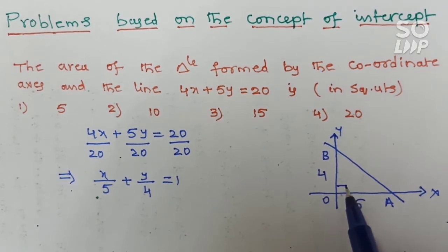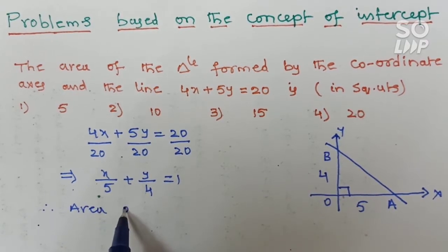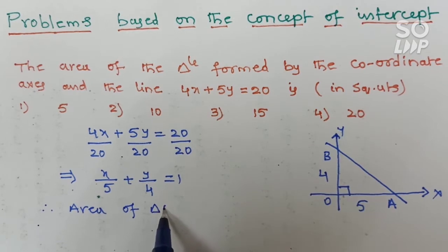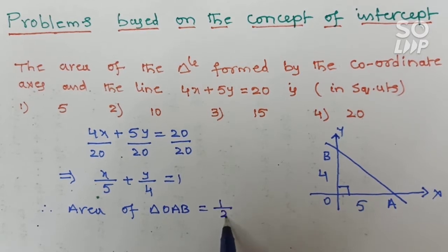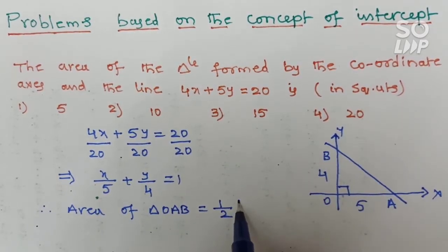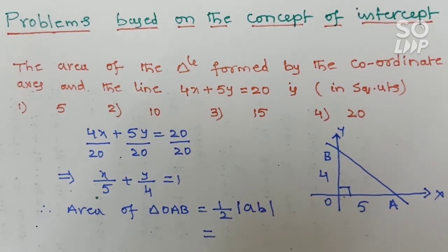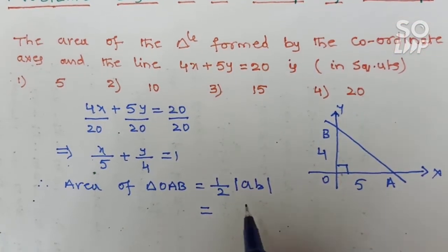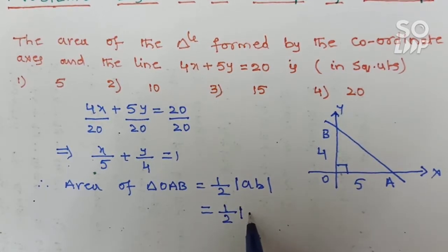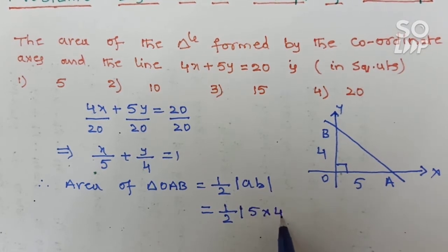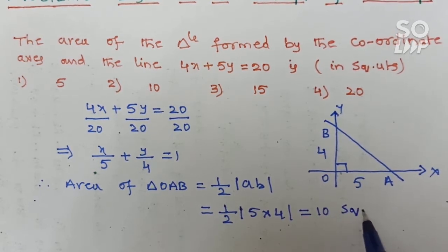Clearly it is a right angle triangle. Therefore area of triangle OAB equals one-half into modulus of A into B, where A is the x-intercept and B is the y-intercept. That is one-half into modulus of 5 into 4, which equals 10 square units. So your answer will be 10 square units.